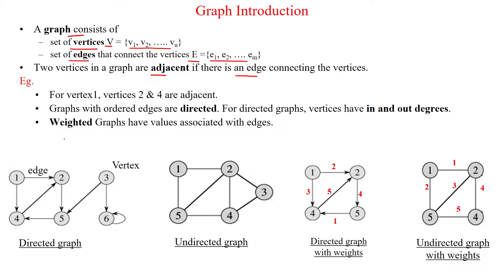For example, vertex 2 and vertex 4 are adjacent vertices to vertex 1. Vertex 1 is this one, and 2 and 4 are the two vertices which are adjacent to vertex 1.